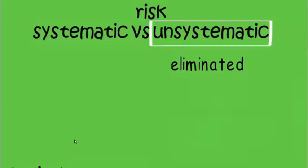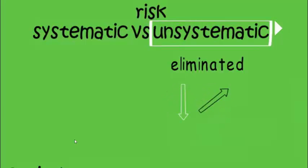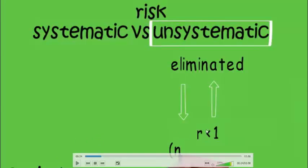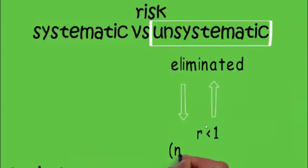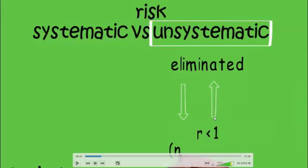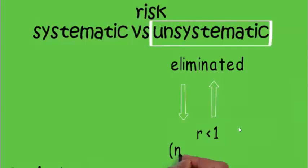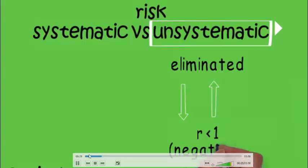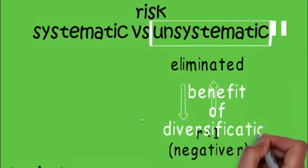Unsystematic risk can be eliminated — as we learnt in Modern Portfolio Theory (MPT) — by combining two assets that move in opposite directions, that is when one rises the other falls. This requires a correlation R less than one, ideally negative correlation. This concept is known as the benefit of diversification.